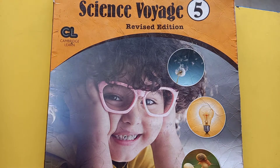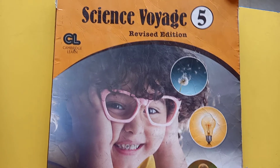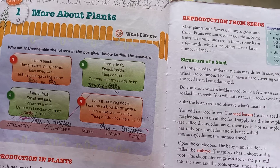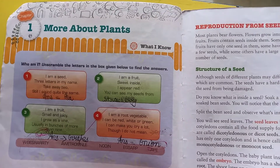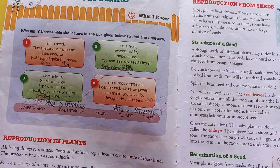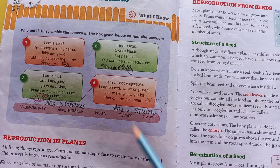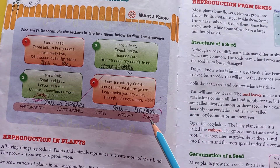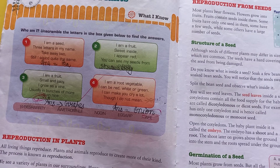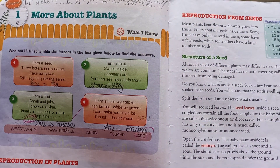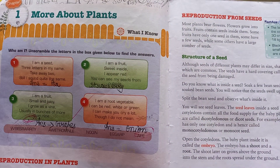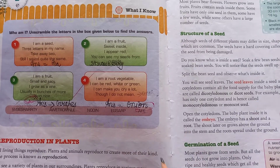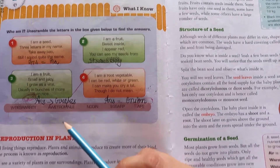So friends, now we will start our first chapter of fifth class. This is your first chapter — 'More About Plants.' As the name suggests, in this chapter we will study about more about plants — plants के बारे में इस चप्टर में study करेंगे. The very first topic is reproduction in plants.